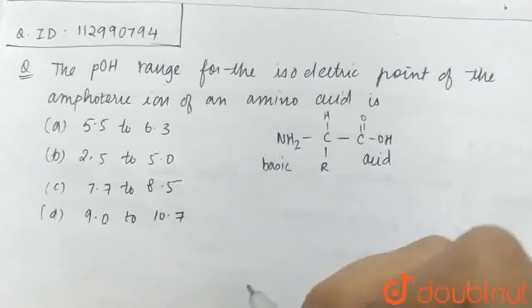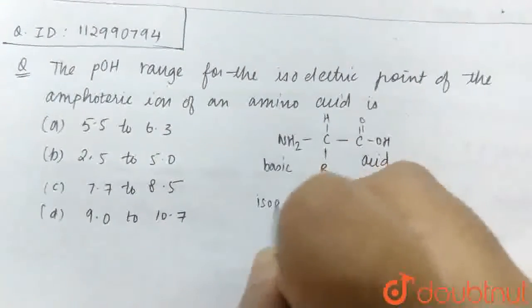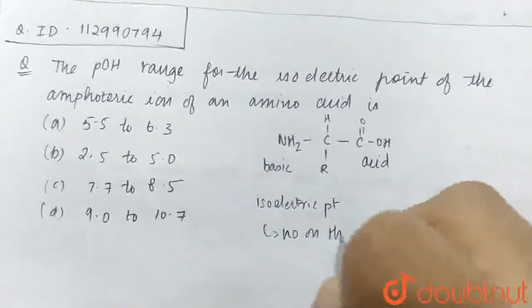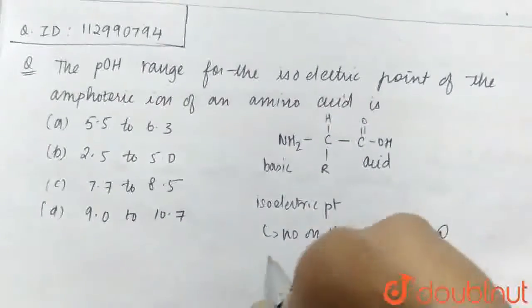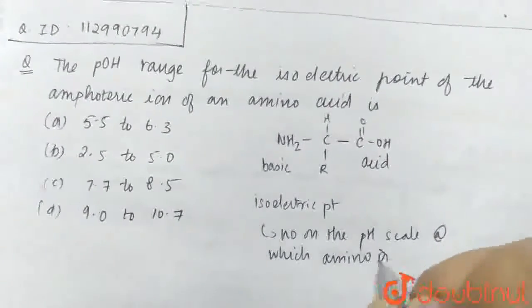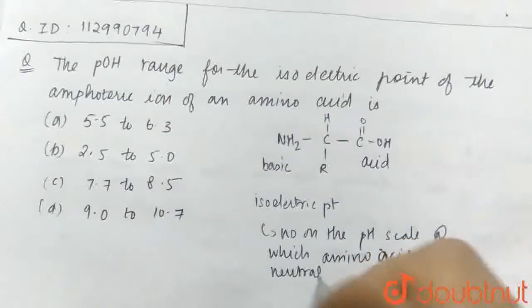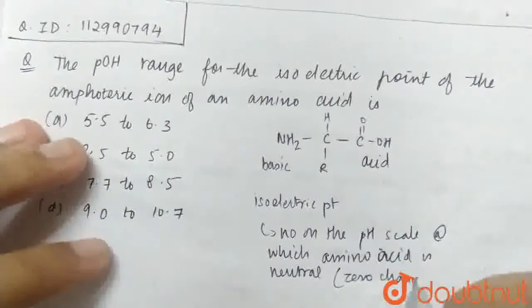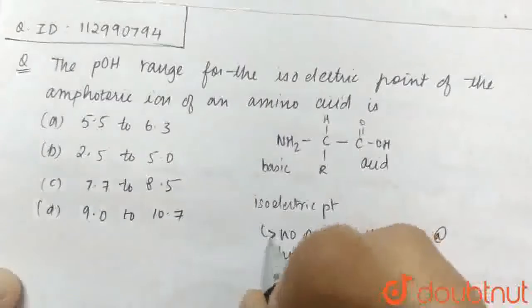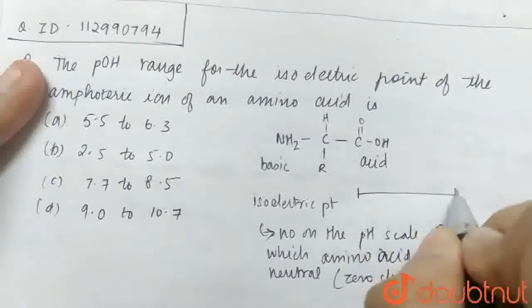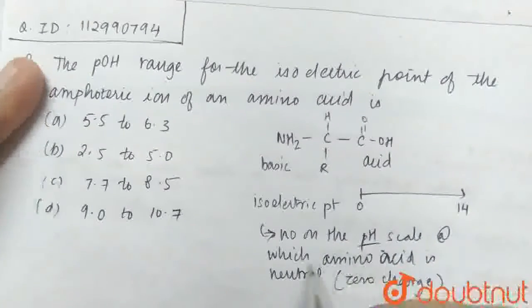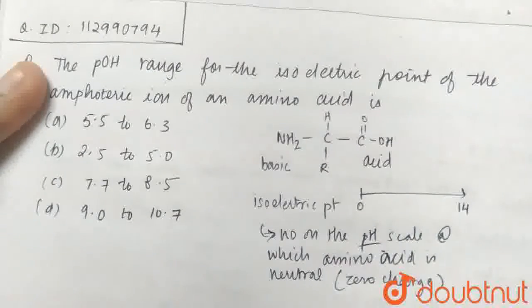What is the isoelectric point? The isoelectric point is the number on the pH scale at which amino acid is neutral.